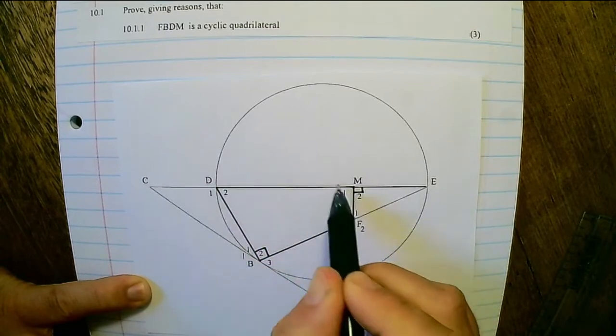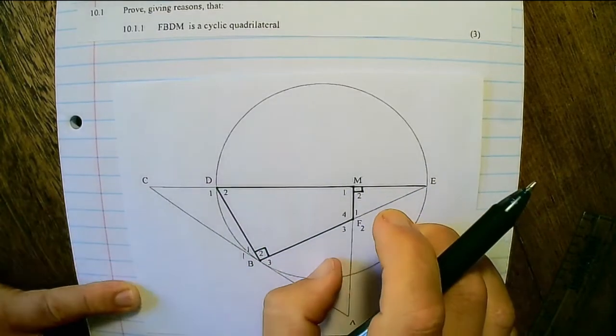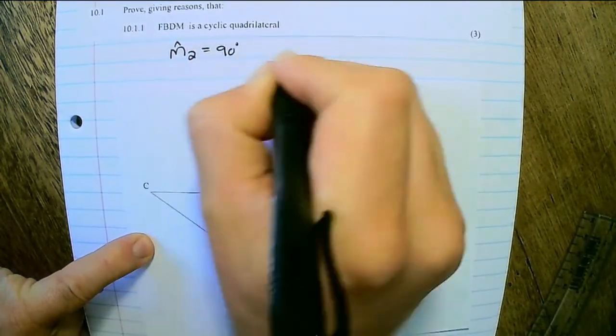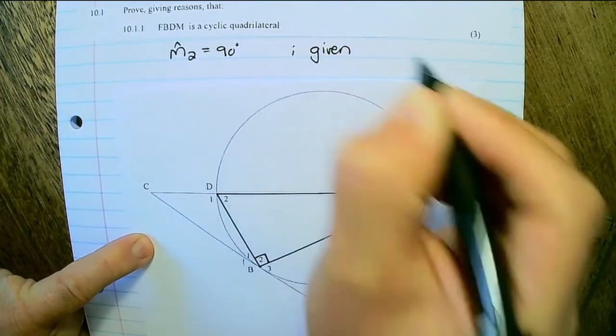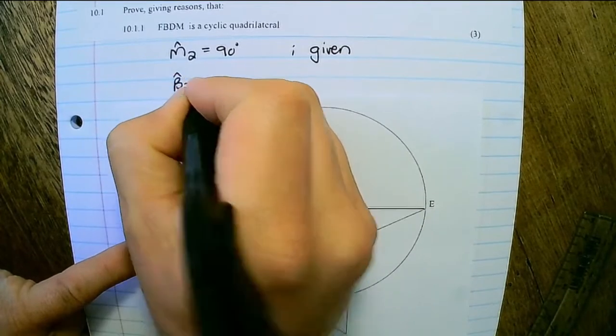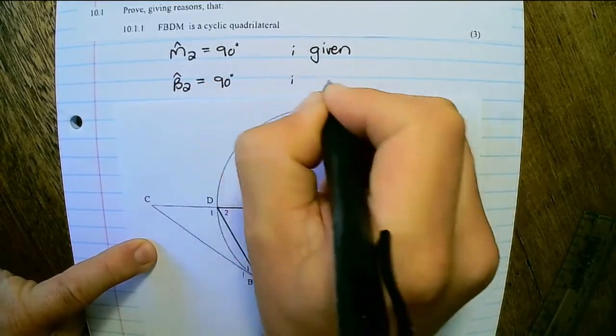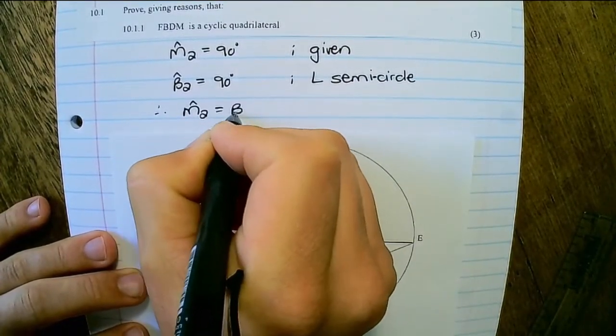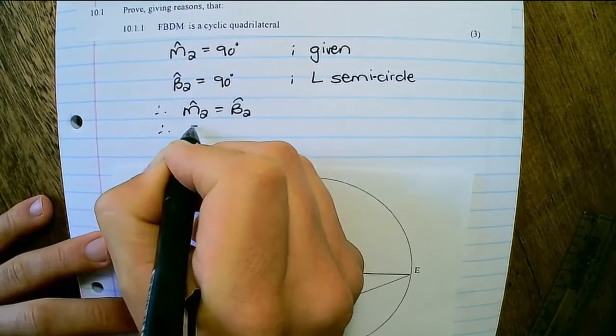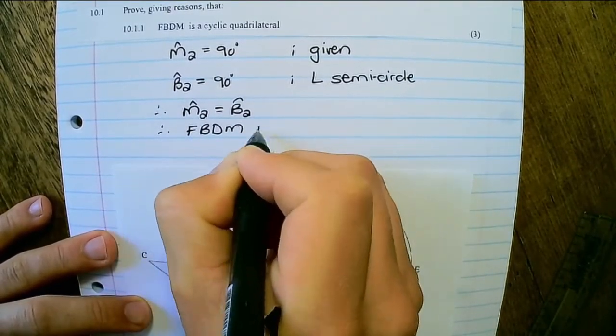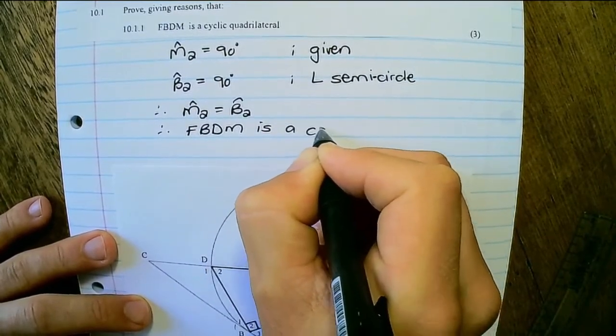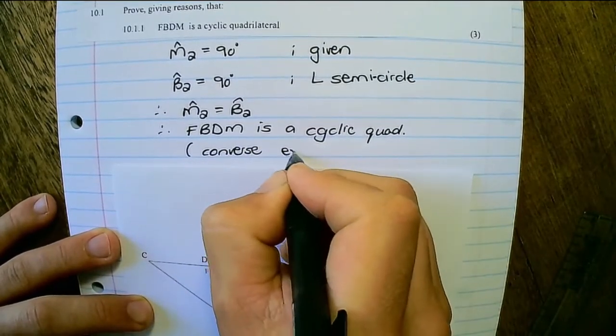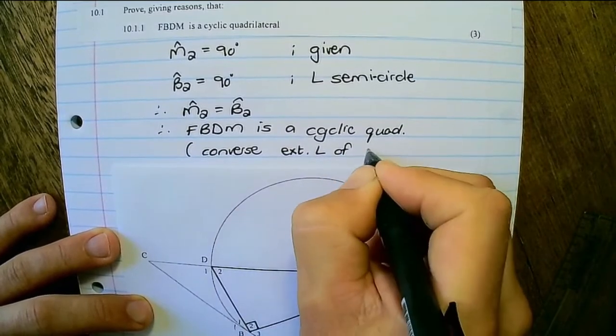must be a cyclic quadrilateral because we have exterior angle of a cyclic quad. So I would say M2 is equal to 90 degrees. Angle B2 is equal to 90 degrees, angle in the semicircle. Therefore M2 is equal to B2. Therefore FBDM is a cyclic quad, and my reason is converse exterior angle of a cyclic quad.